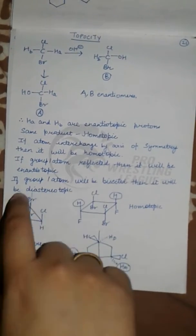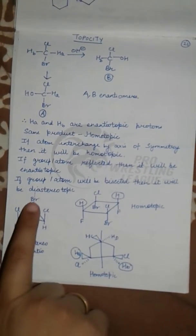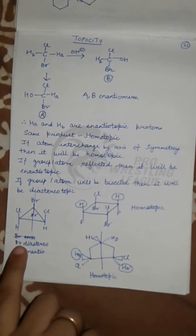If the group or atom will be bisected, then it will be diastereotopic. For example, in this compound the atoms are bisected, so it is diastereotopic.